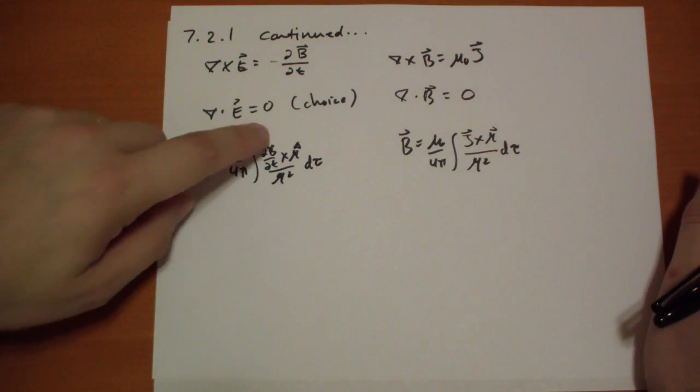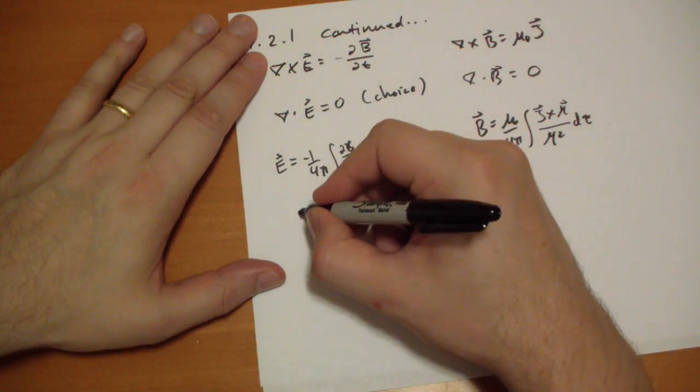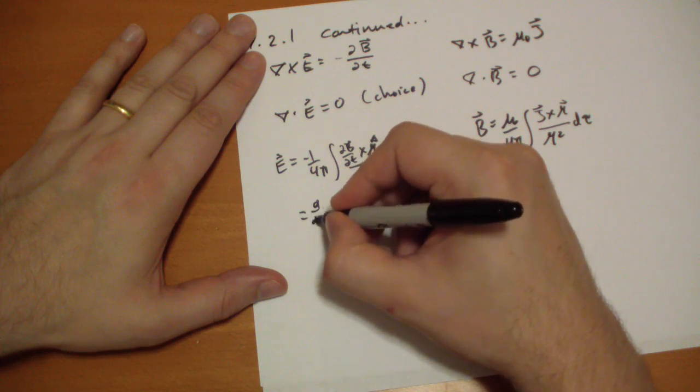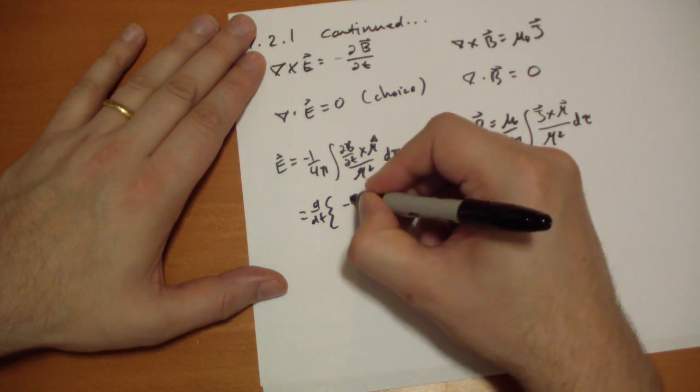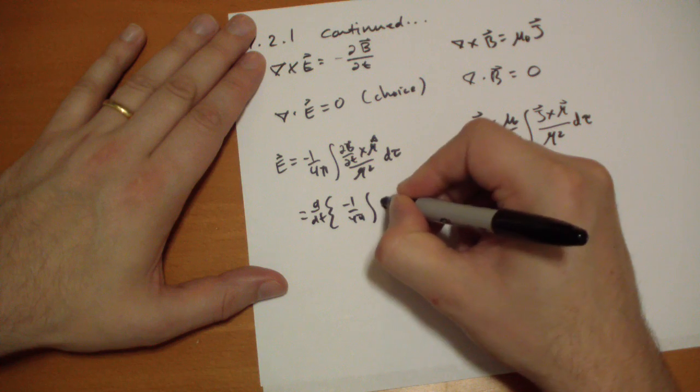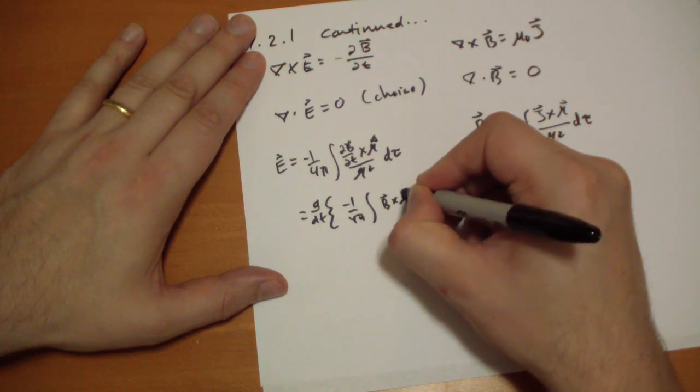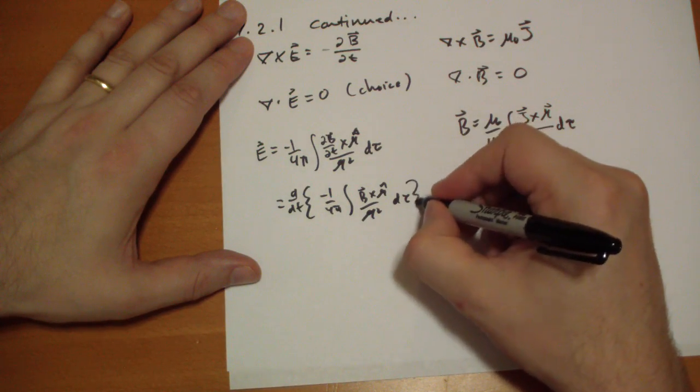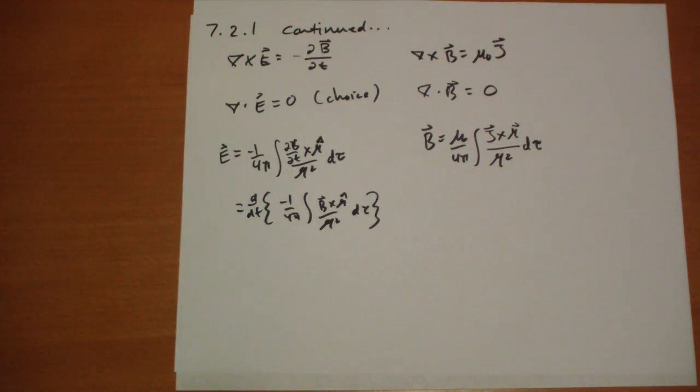And we can actually pull this time dependency thing out, so we have d by dt of negative 1 over 4 pi integral of B vector cross r hat over r squared d tau. Okay, so that's an interesting parallel.